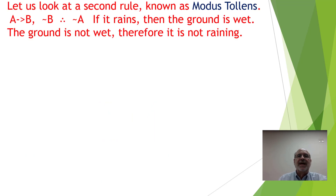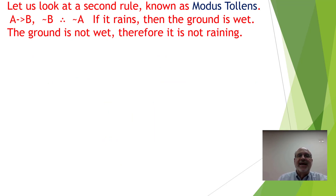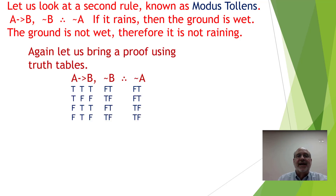Now let's look at a second rule known as modus tollens: A implies B, not B, therefore not A. For example, if it rains then the ground is wet; the ground is not wet; therefore it is not raining.